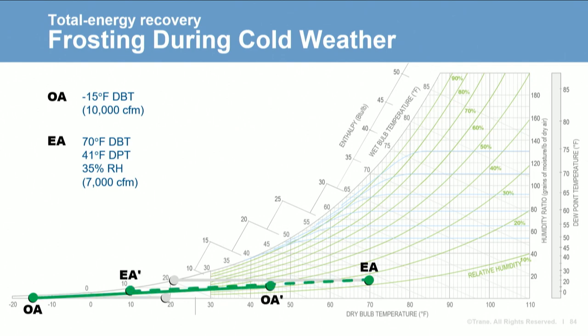Since sensible recovery devices do not transfer water vapor, the leaving exhaust air condition reaches saturation and freezes at warmer outdoor temperatures than it would for a total energy recovery device. However, with any technology, depending on conditions, some method may be needed to prevent frosting. It involves either reducing the heat recovery capacity of the device or preheating the air before it enters the device. Coil loops typically use a three-way valve to keep the fluid temperature warm enough so the exhaust side coil surface doesn't drop below the current frost point or 32°F. Heat pipes and wheels can modulate bypass dampers or supply side bypass dampers to reduce heat transfer and prevent frosting.